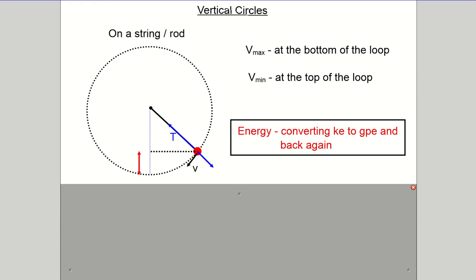We've got our tangential speed v, but now because we're working in the vertical direction, weight now matters. Before, weight was acting down but in horizontal circles they were independent of each other. Now they're not independent — we have to take into account the weight of the particle as it travels around the circle. Weight acts vertically downwards. Working in the radial direction from the center of the circle outwards, like with angles on an inclined plane, we just look at the mg cos theta component of the weight.